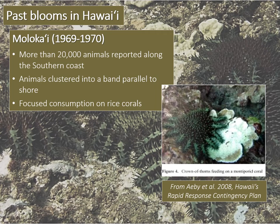Large blooms of Crown of Thorns Seastars have been an uncommon occurrence in Hawaii. One of the most famous cases spanned from 1969 to 1970 along the coral ridge southern coast of Molokai Island. During this bloom, more than 20,000 animals were reported along the shallow reef area, forming a band approximately 2 kilometers in length. The sea stars focused their grazing on less common rice corals. An eradication effort was organized by the Hawaii Division of Fishing and Game in 1970. After this bloom, coral regrew quickly and a major long-term loss in coral cover was not reported.